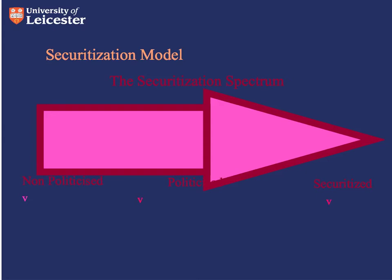The securitisation model involves a spectrum. On one hand, there are issues not considered political — not included in public debate, but instead a private matter. Along the spectrum, we have politicised issues, which are a matter of public policy and part of the standard political system. At the other end are issues that have been securitised, given special priority status. Securitising an issue radicalises the range of possible policies the securitising actor can enact. Because the security discourse carries with it a sense of urgency, priority, alarm, and crisis, actors can take extraordinary measures in its name.